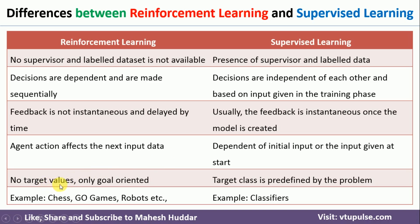In reinforcement learning, there are no target values — it is goal-oriented. We know the initial state and the goal, and we have to identify the optimal path to reach that goal state. In supervised learning, we have predefined target classes, and because of that we can say whether the model's output is correct or wrong using those predefined target classes in the dataset.